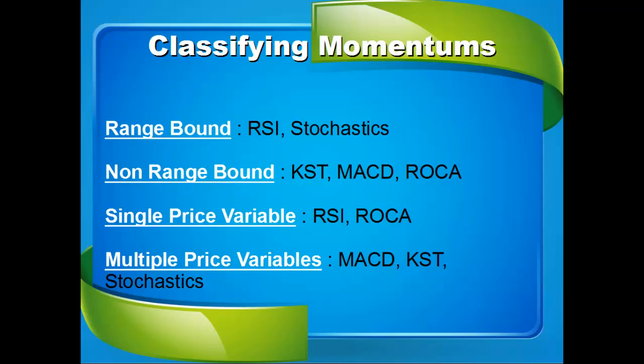The same doesn't apply to indicators like MACD and Stochastic, where highs, lows, opening price, and moving averages are also taken into consideration. Momentum indicators where more than one price variable is taken into consideration always clearly display the oscillating property of price, and hence are also known as Momentum Oscillators.